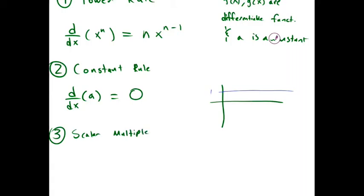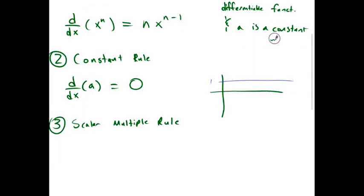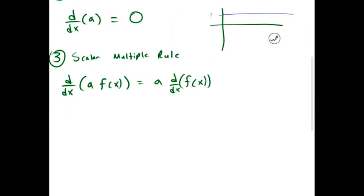Okay, so this is also technically a constant. We'll call it the scalar multiple rule, or coefficient rule. So we're taking the derivative of some function multiplied by a constant a, then you can pull the constant out and multiply that by the entire derivative of the function.